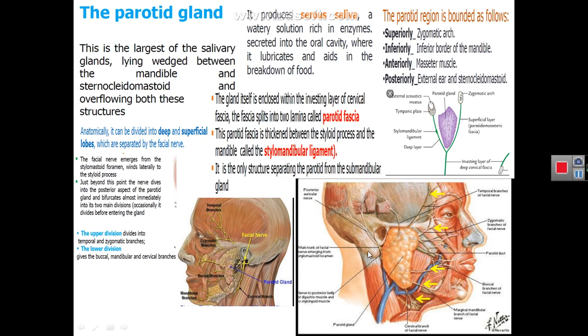In this position between the angle of the mandible and the mastoid process, the investing deep cervical fascia is split to enclose the parotid gland. The investing deep cervical fascia in this region forms superficial and deep laminae surrounding the parotid gland. The superficial lamina is attached to the zygomatic arch, while the deep lamina forms the stylomandibular ligament that extends between the styloid process and the mandible.